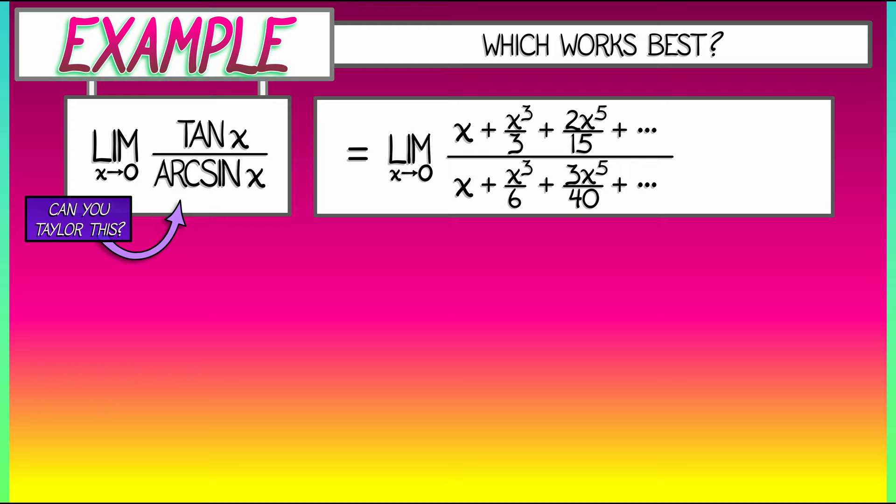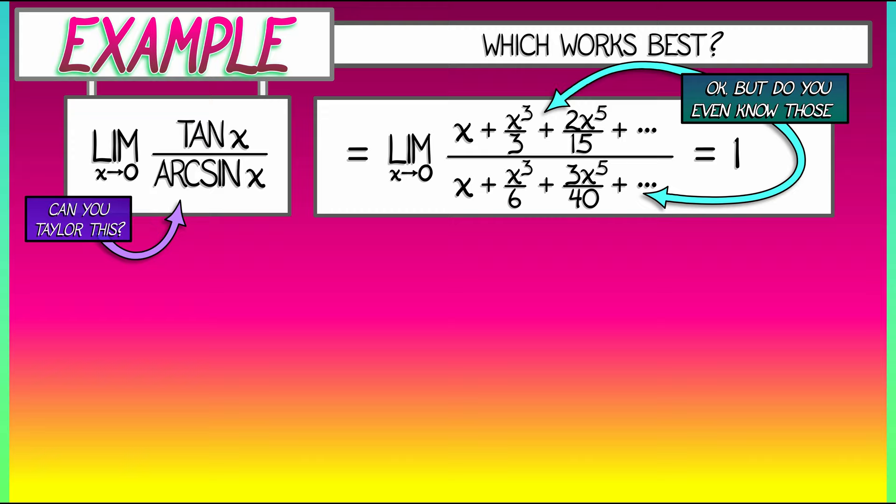But really, the only thing that matters here are those leading order terms, which is x up top and x down below. Factor that out, take a limit as x goes to zero, you get one. That's it. That's the answer. Great. Taylor expansion. It works fine.